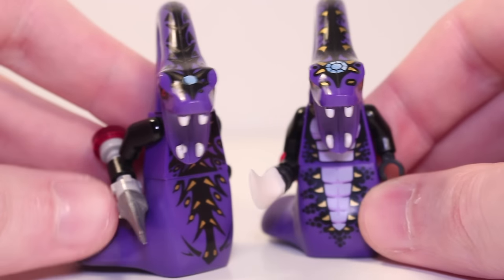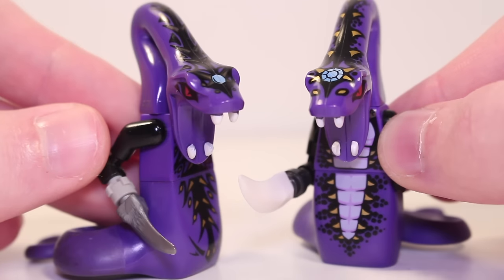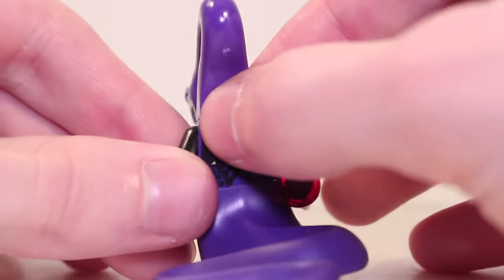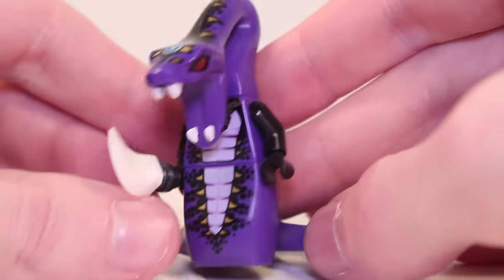And in 2019, purple Pythor returned thanks to Legacy, quite a lot different to his original version, but on the whole still another great minifigure. It also still captures some of the iconic details like the blue diamond and gold accents within the black scales. That was it for Pythor until 2022, but we'll save that one for later.